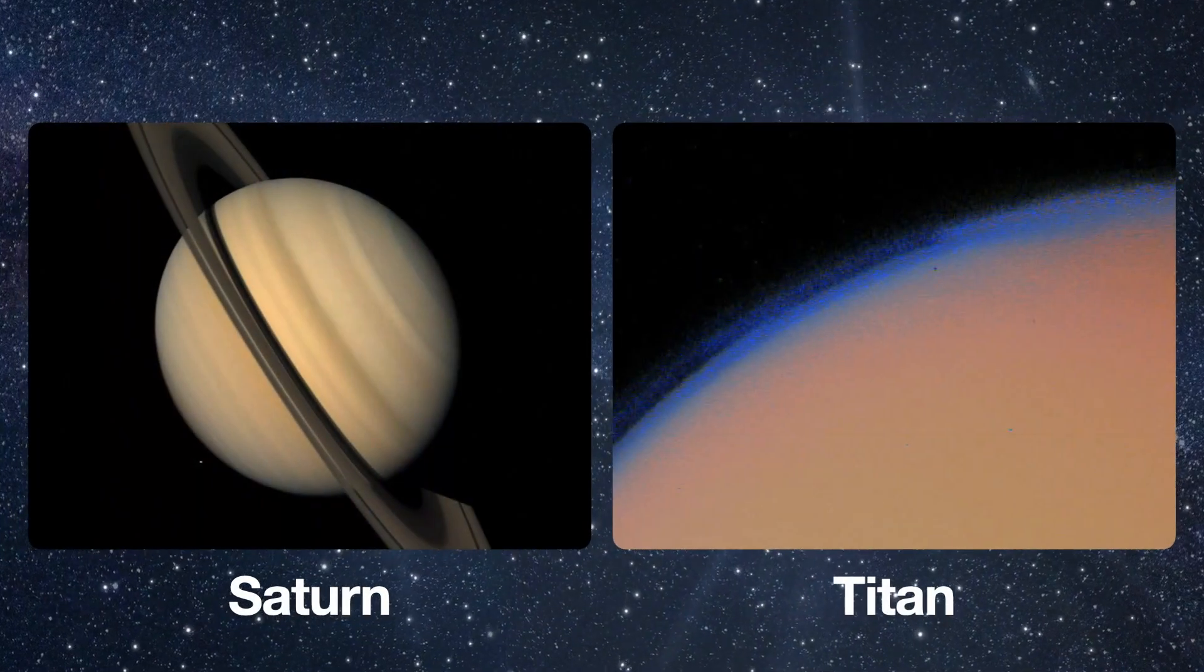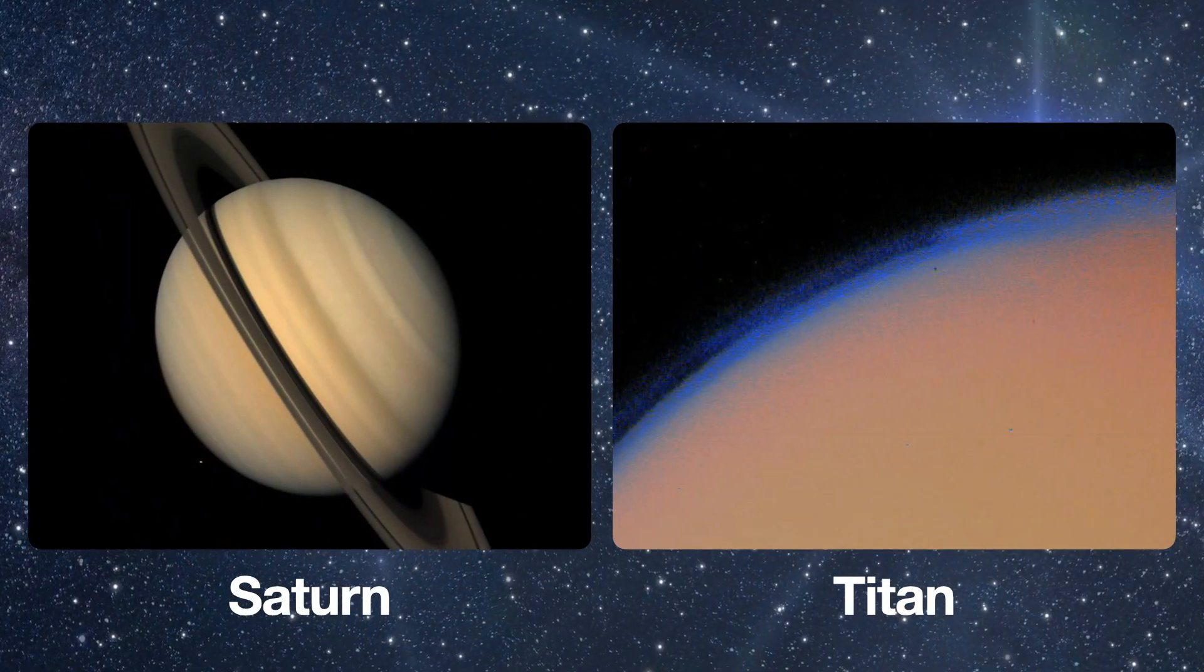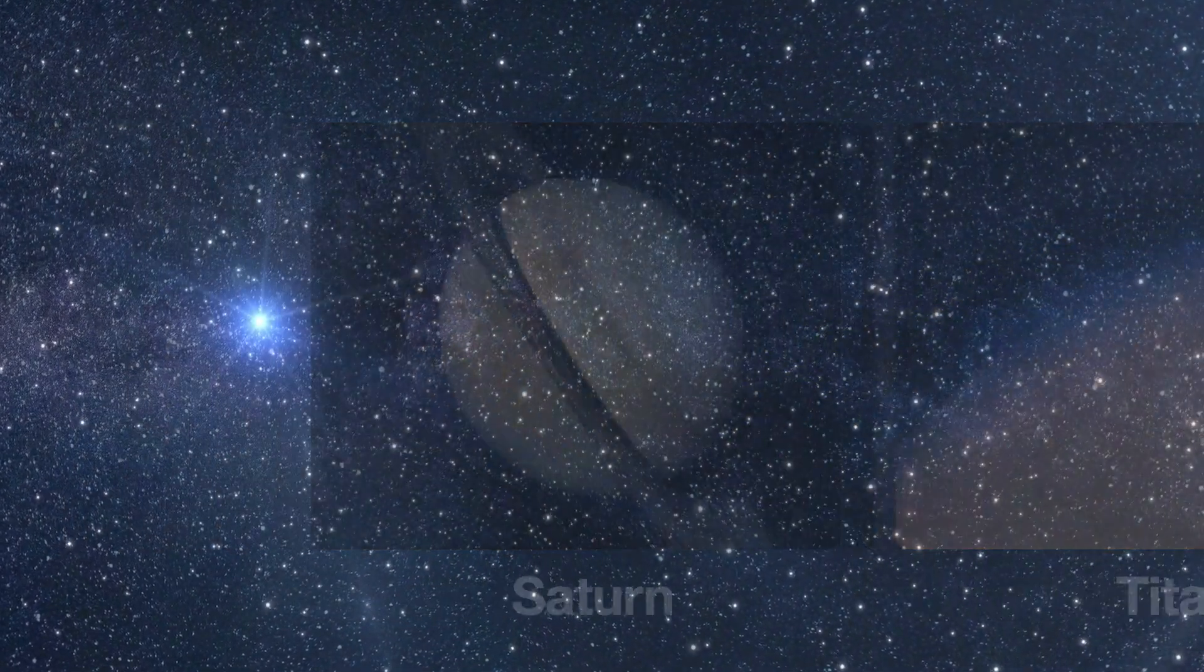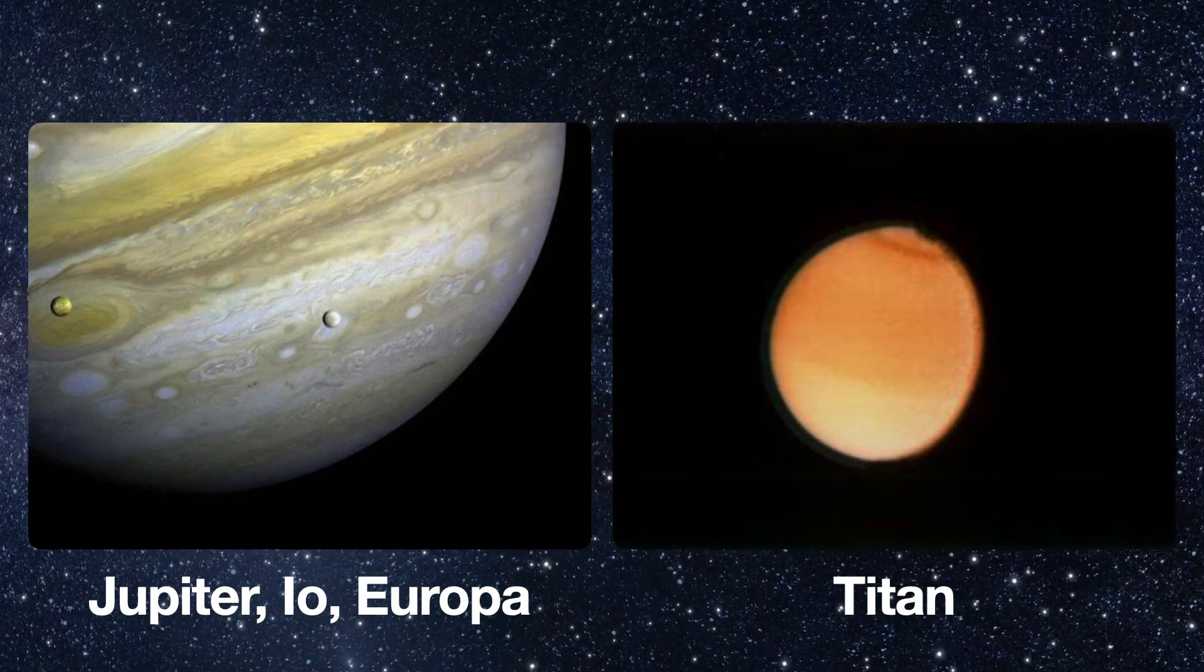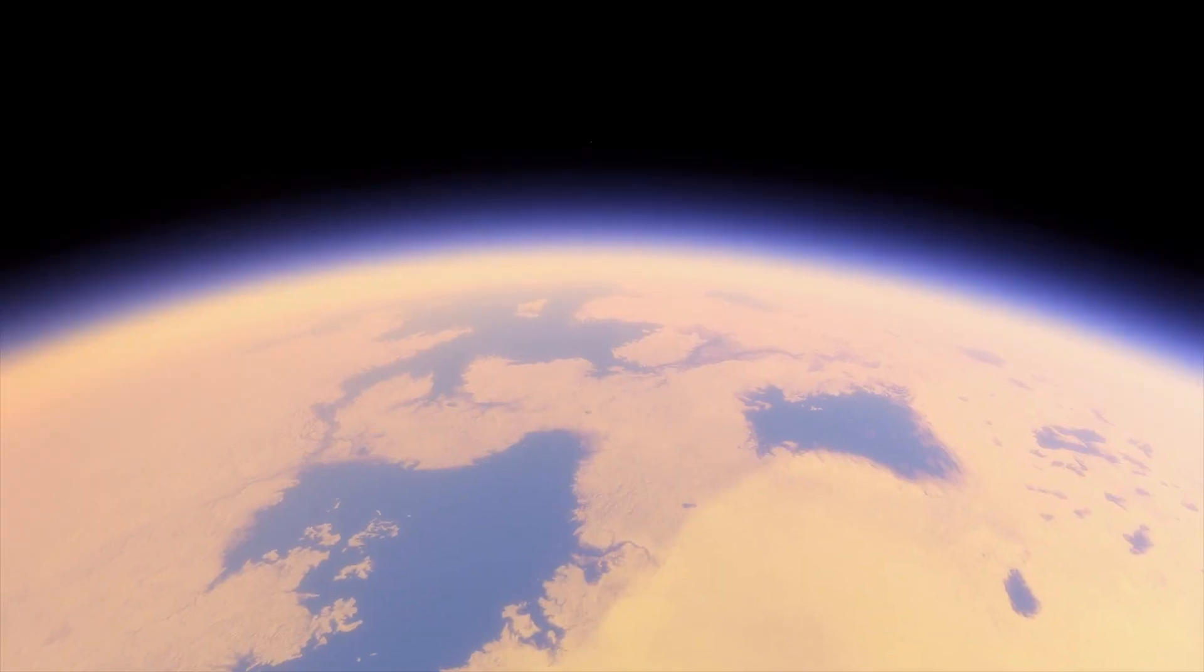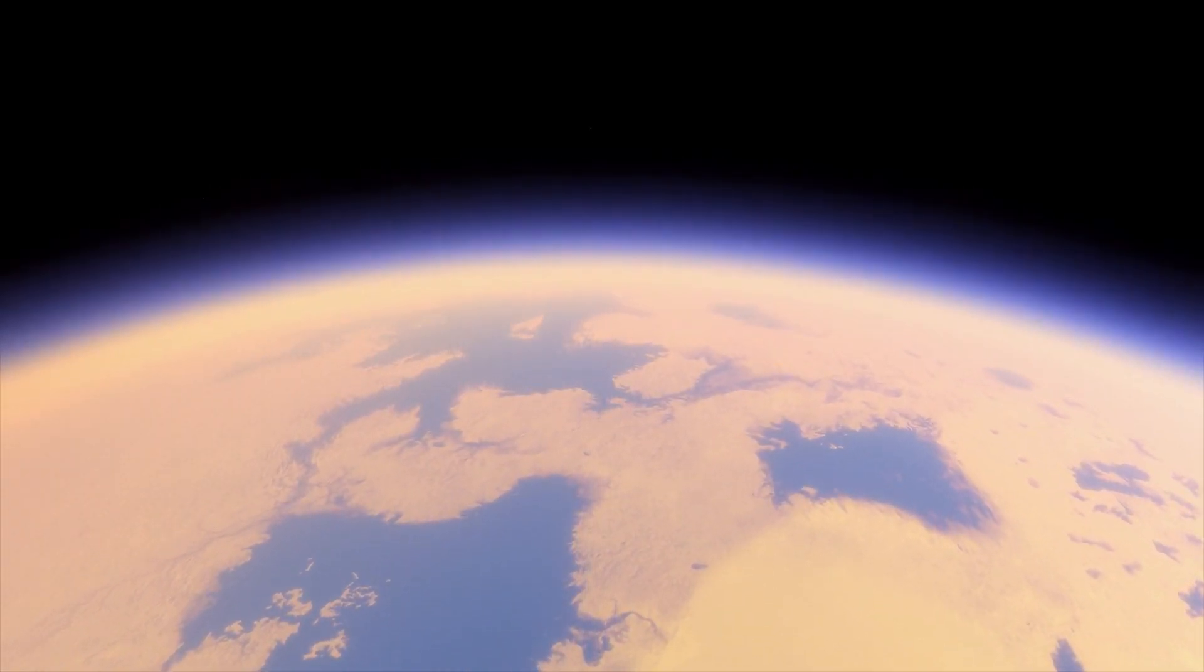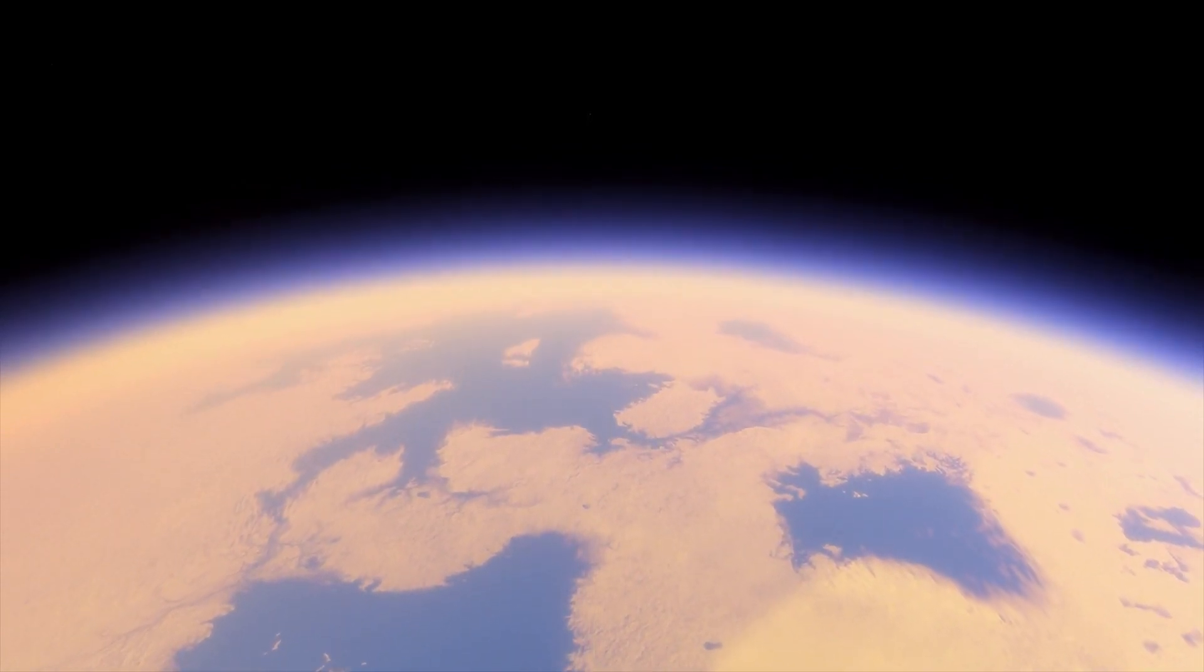NASA had the option to send Voyager 1 to either Titan or continue on to Uranus and Neptune. Based on earlier observations of a substantial atmosphere on Titan, NASA selected it for further exploration. Because of Voyager 1's observations and future missions, it is believed that Titan has considerable amounts of liquid hydrocarbons on its surface, making it the only celestial body besides Earth known to have stable surface liquids.